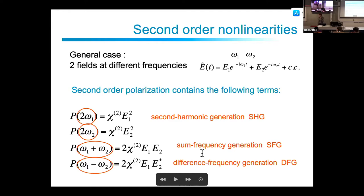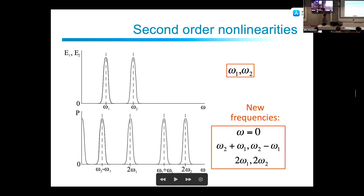Here is a schematic view of the different second-order processes: the two incoming fields, second harmonic generation for each, sum frequency generation, and the difference between the two frequencies. That is the typical range of second-order effects.